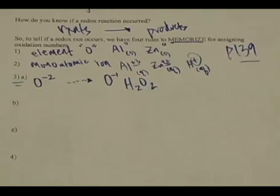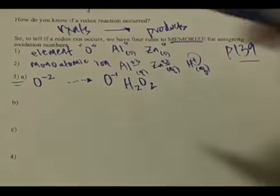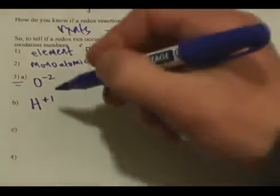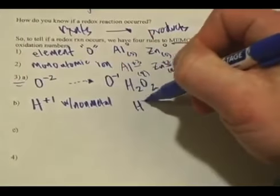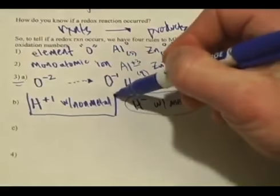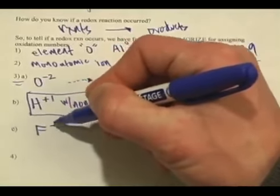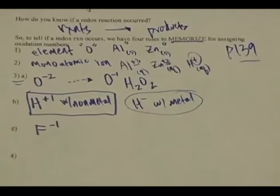Rule 3B: the oxidation number of hydrogen is always plus one when it's with a non-metal, and always negative one when it's with a metal. You don't see it with a metal too often, so the rule to really know is that hydrogen is almost always positive one. And then the last rule about non-metals is that fluorine — one of the few 'always' rules in chemistry — is always minus one.